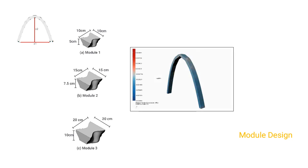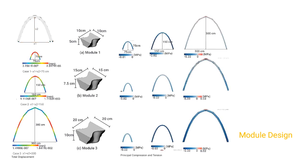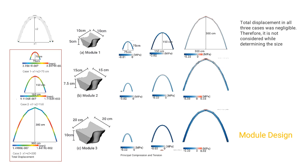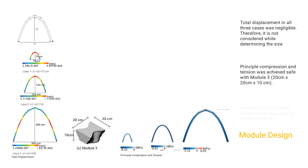The Scan&Solve plugin for Rhinoceros 5.0 was used for structural simulations. Total displacement and principal compression and tension were analyzed under self-weight. Total displacement in all three cases was negligible and not considered in determining size. Principal compression and tension were achieved safely with module 3 — 20×20×10 cm — for a 300 cm span and height up to 150 cm. Hence module 3 was used for further research.